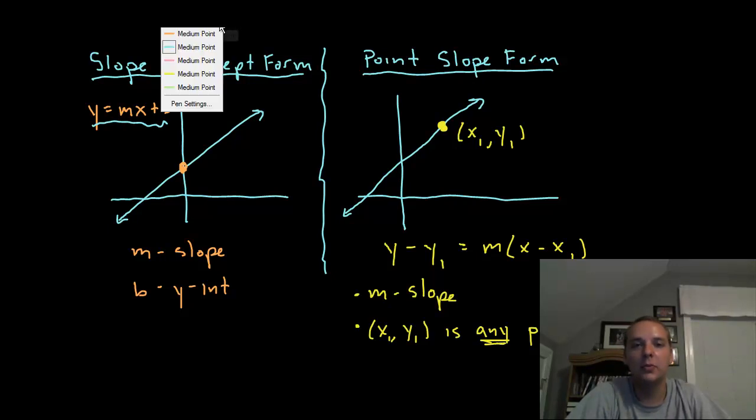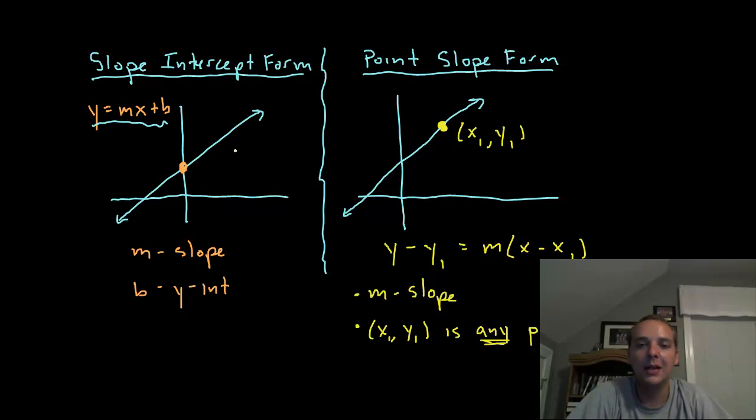What happens more often though is the point that we're given is not necessarily a y-intercept, so we might be more inclined to use point-slope form. So again you have to know the slope, but this format y minus y₁ equals m parenthesis x minus x₁, that's more general and allows you to plug in any xy point, not just one on the y-intercept.